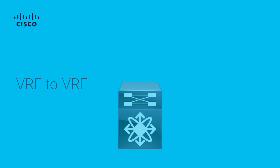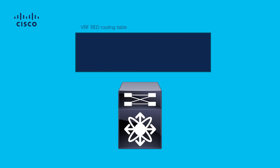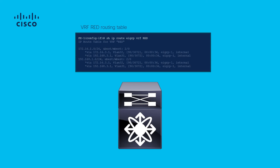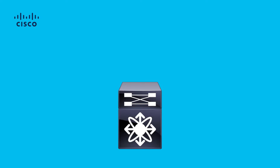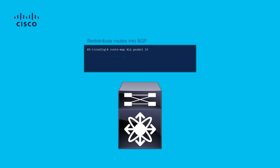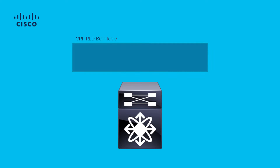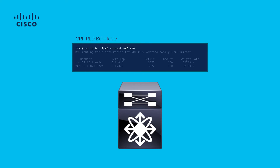VRF to VRF. In this case, Nexus has received two routes in its VRF red via EIGRP. The configuration leaks the routes into VRF blue. Redistribute the routes which exist in the VRF red routing table into BGP. Since the routes are in VRF red, the redistribute command in BGP goes under the VRF red Address Family IPv4 Unicast section. Upon redistributing the routes into BGP, we can verify their visibility via BGP within VRF red.